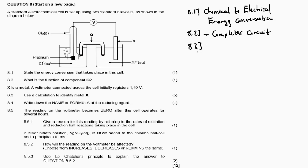Question 8.3: X is a metal. A voltmeter connected across the cell initially registers the E_cell, the EMF. It registers 1.49 volts, which is given. Use a calculation to identify metal X.